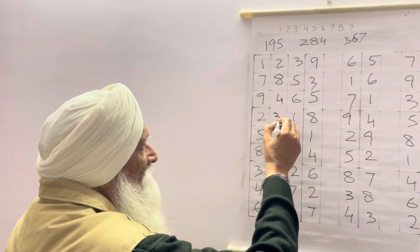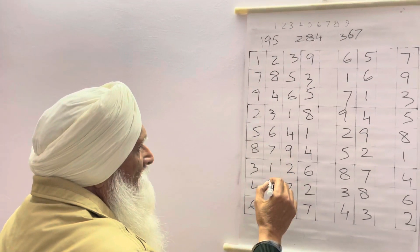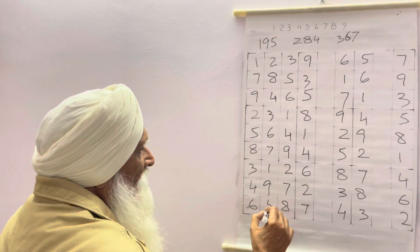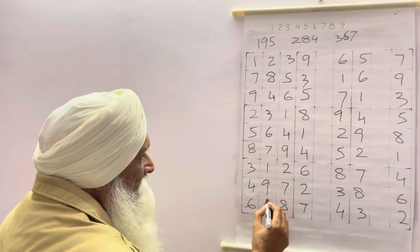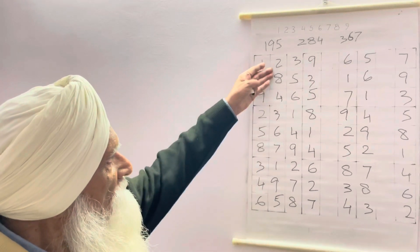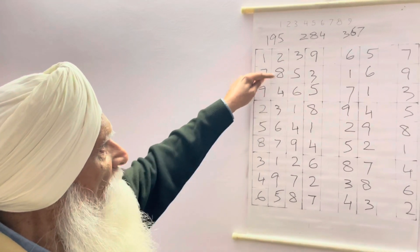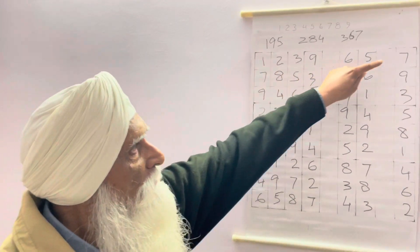So we will come here: 2, 8, 4; 2, 8, 4. Next is 3, 6, 7; 1, 9, 5. We have filled 3 blocks, so we have filled one column here. Now we have to go to this column. What we have to fill: 2, 8, 4 here and 2, 8, 4 here.